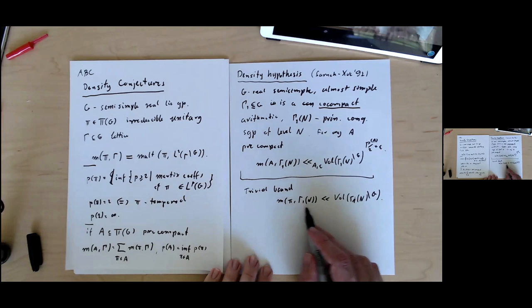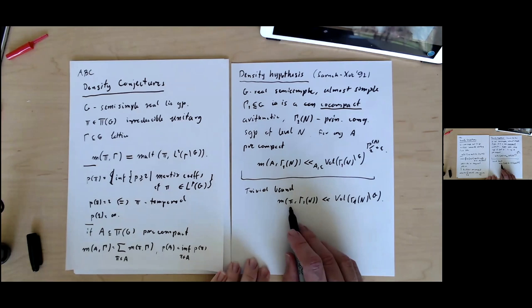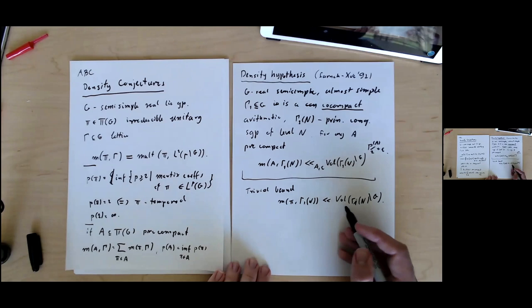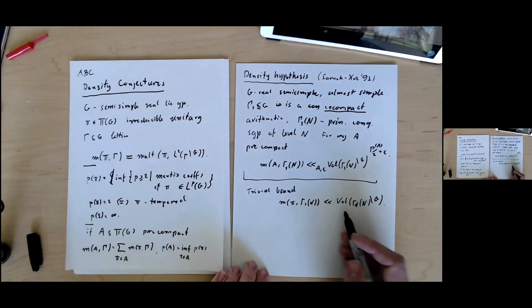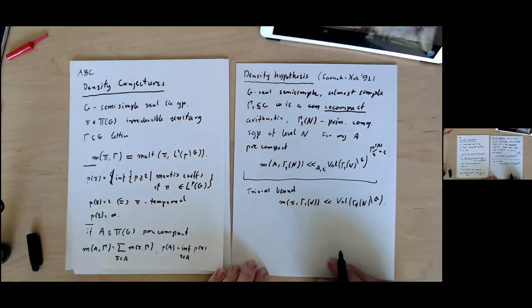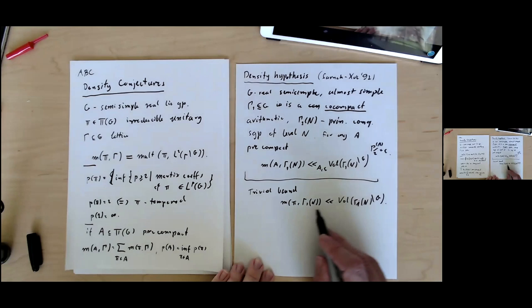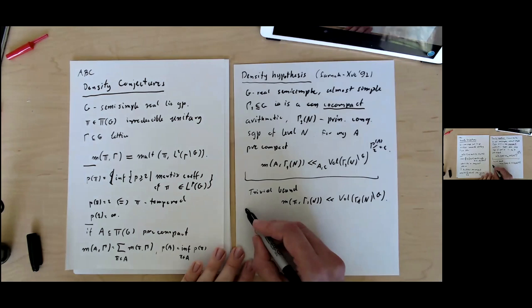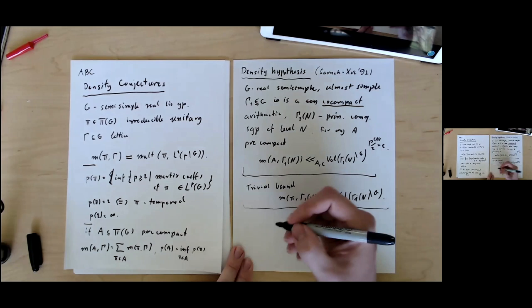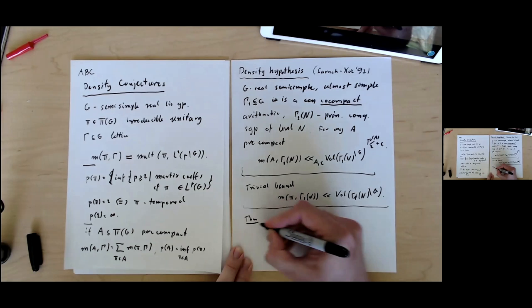If pi is tempered we'll typically have small o here, but for non-temperate presentation we should expect something better. This conjecture makes precise to what extent should be better because it interpolates between what happens for temperate representation where we suggest this bound with no power saving and what happens for trivial representation where we can bound this by one. Some results in that direction, certainly in this paper from 91.